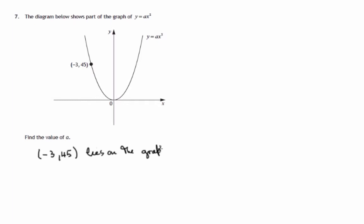Now any point that lies in this parabola, the values of the x and y coordinates will satisfy the equation. So in this case, we know the x-coordinate is negative 3 and the y-coordinate is 45. So these two values satisfy that equation, y equals ax squared.